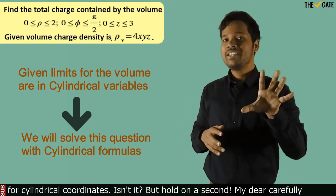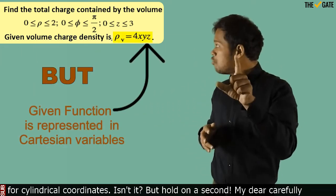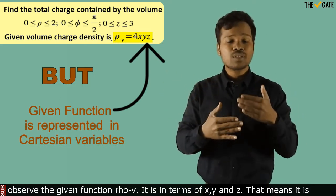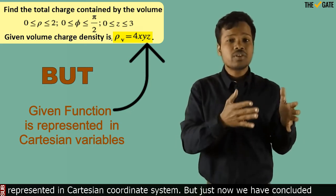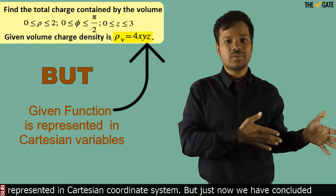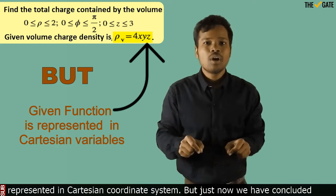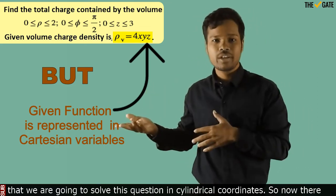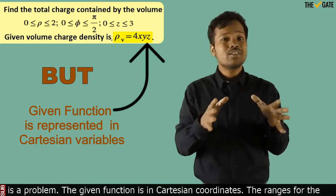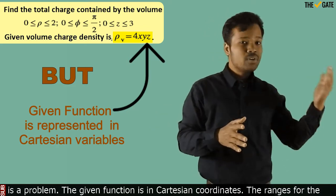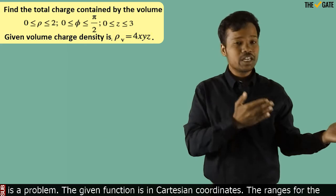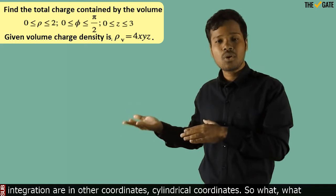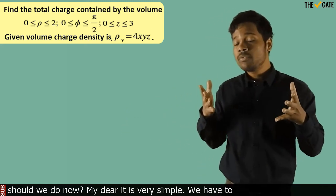But hold on a second. Carefully observe the given function ρv — it is in terms of x, y, and z. That means it is represented in the Cartesian coordinate system. But we have just concluded that we are going to solve this question in cylindrical coordinates. So now there is a problem: the given function is in Cartesian coordinates, while the ranges for integration are in cylindrical coordinates.